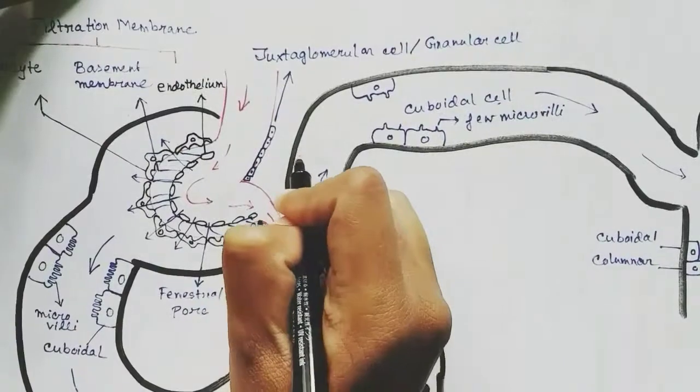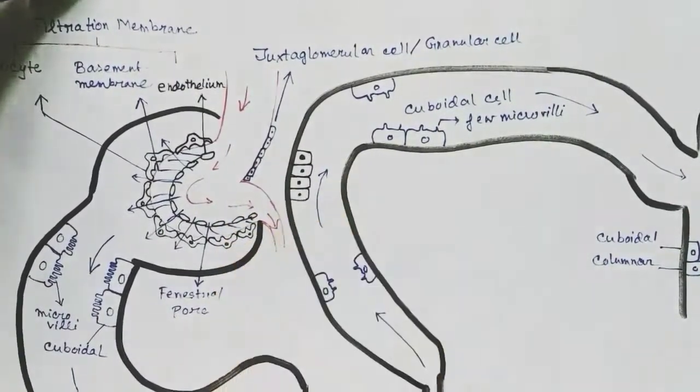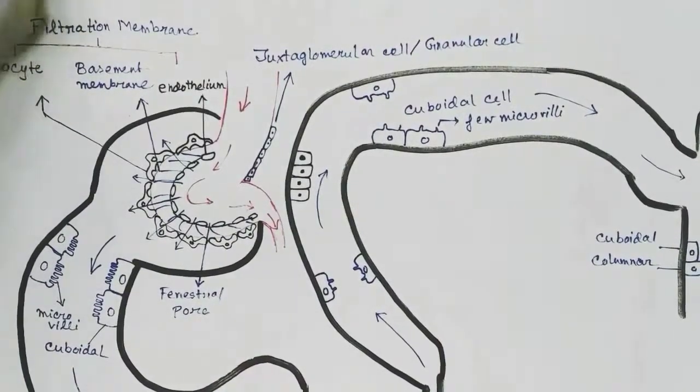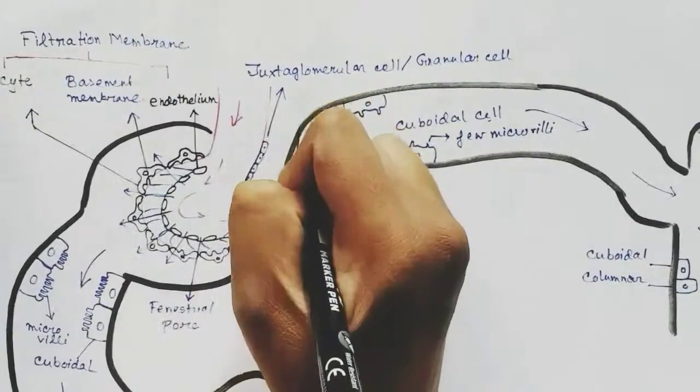At the junction of the thick ascending limb of Henle and the distal convoluted tubule, there are specialized cells called macula densa cells.